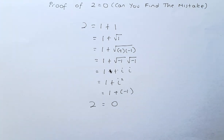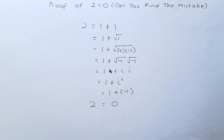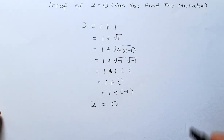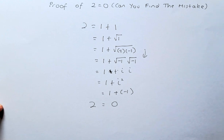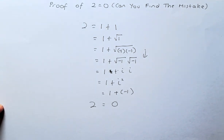I will now explain where the mistake came from — this is the common mathematical fallacy. The problem is in going from this step to this step: square root of negative 1 times negative 1 is set equal to square root of negative 1 multiplied by square root of negative 1.